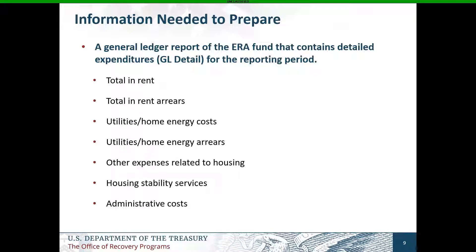You should also have at the ready a breakdown of expenditures by GL code related to how much your tribe or TDHE has expended on rent, utilities, arrears, housing stability services, other expenses related to housing, and administrative costs. If you've not recorded these costs by GL code separately, work with the program director to get this data at the ready. Keep in mind that the last category, administrative costs, cannot exceed more than 10% of the tribe's award for direct and indirect admin costs.